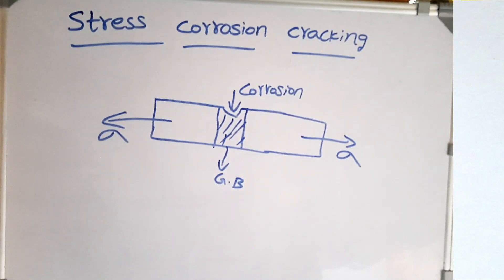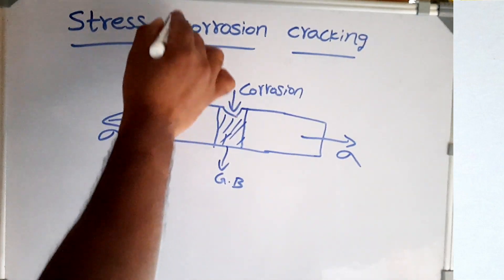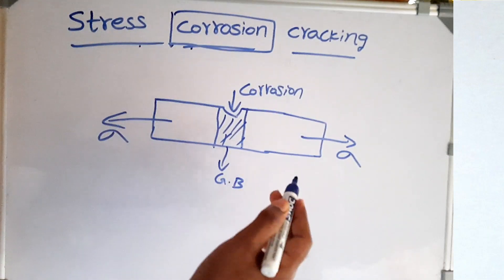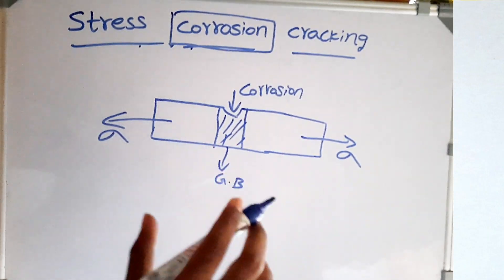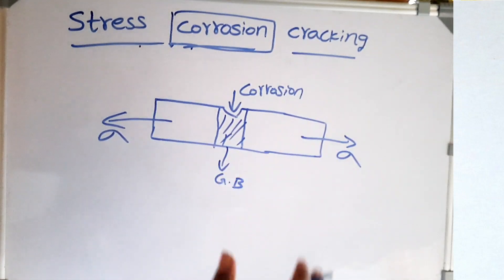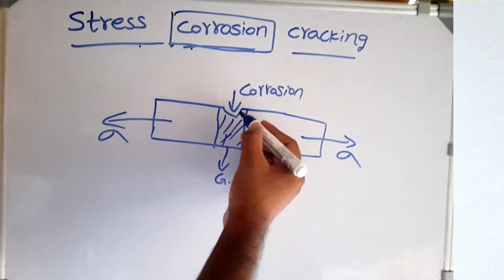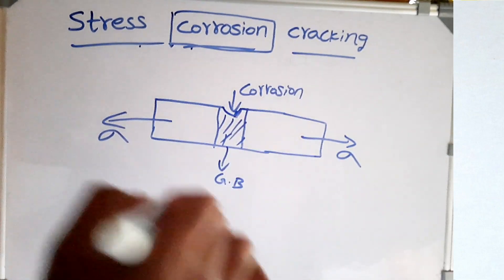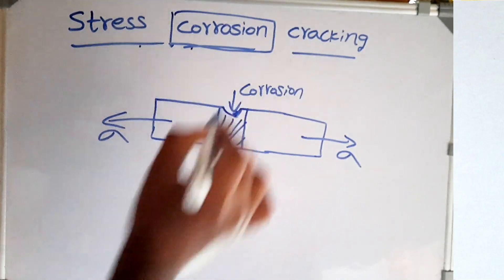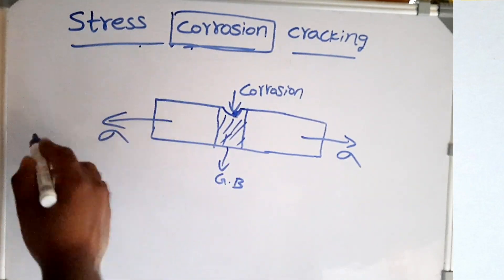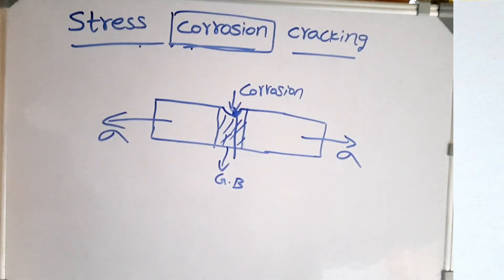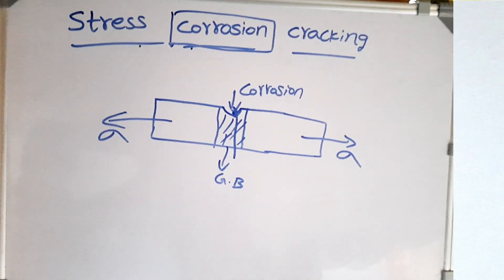Now let's look at stress corrosion cracking. Stress corrosion cracking means corrosion is occurring at the same time as there is a presence of stress — under these conditions material fails significantly. The whole surface of the metal acts as cathode but the grain boundary area acts as anode, creating highly localized corrosion. If a small pit forms in the grain boundary region there is a high stress concentration at that point, and if there is a tensile load the material breaks. When failure occurs because of the combination of stress and corrosion, we call this stress corrosion cracking.